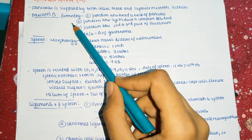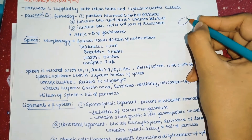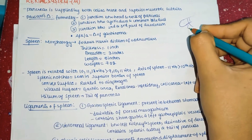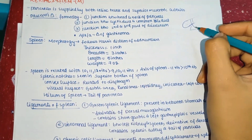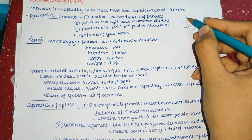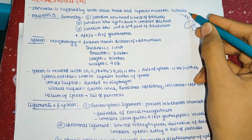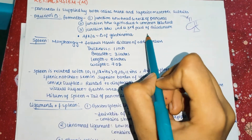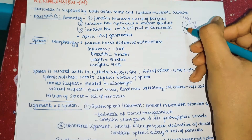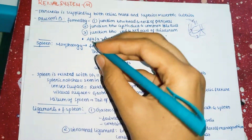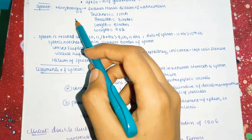Passaro's triangle is formed at the junction between the head and neck of pancreas, the junction between the cystic duct and common bile duct, and the junction between the second and third parts of the duodenum. This is also known as the triangle of gastrinoma.